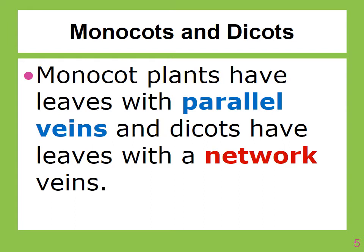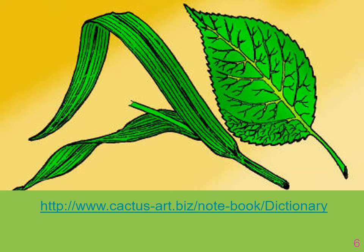Monocot plants have leaves with parallel veins, and dicots have leaves with network veins. On the left you will see parallel veins, and on the right you will see network veins.